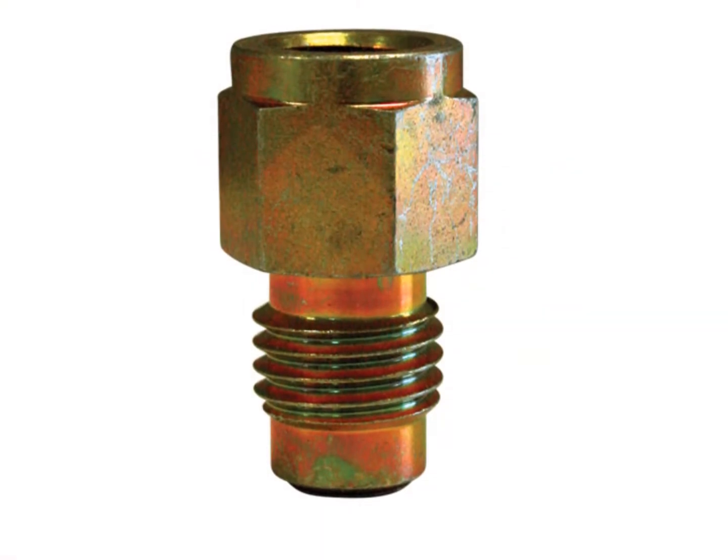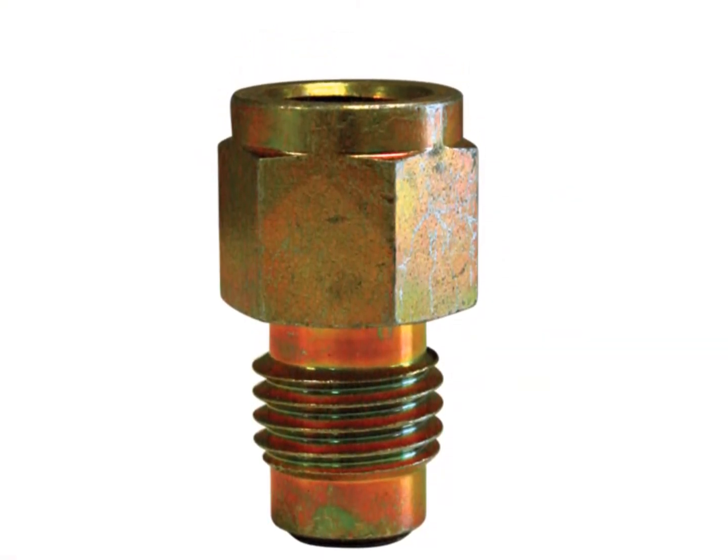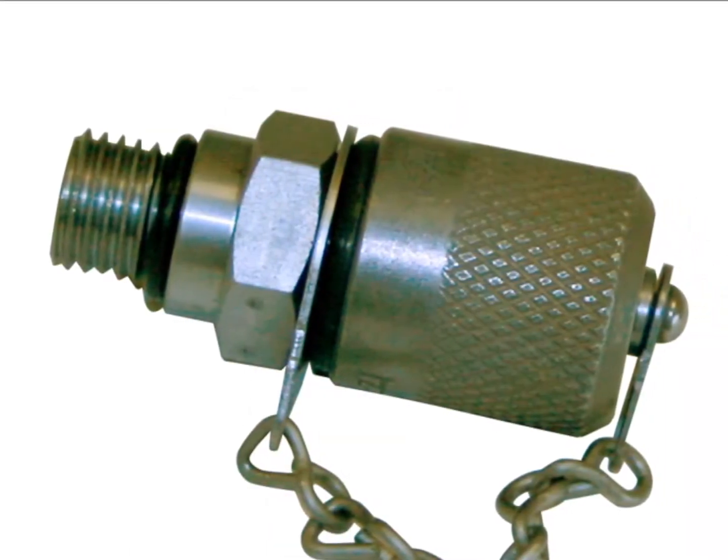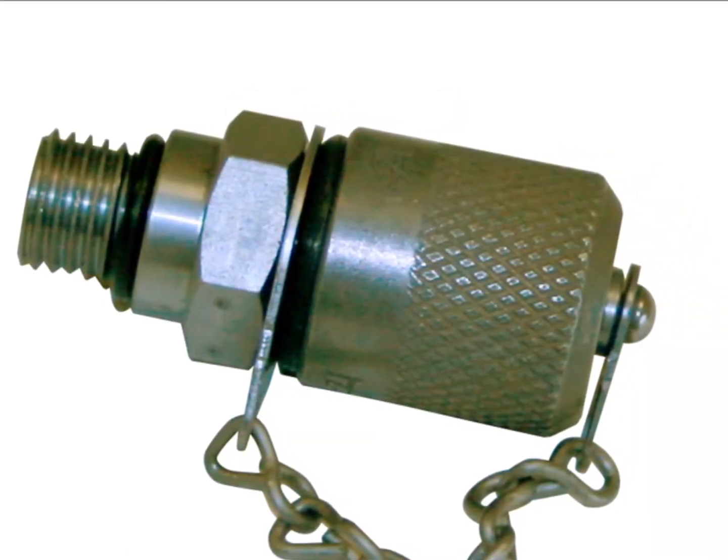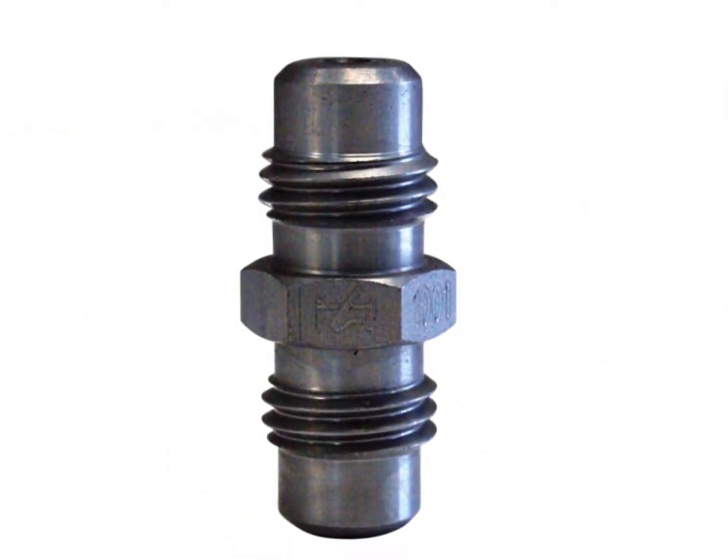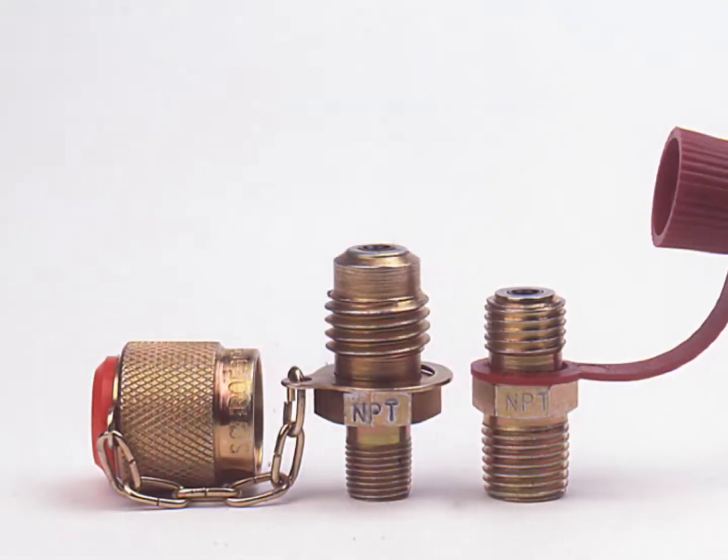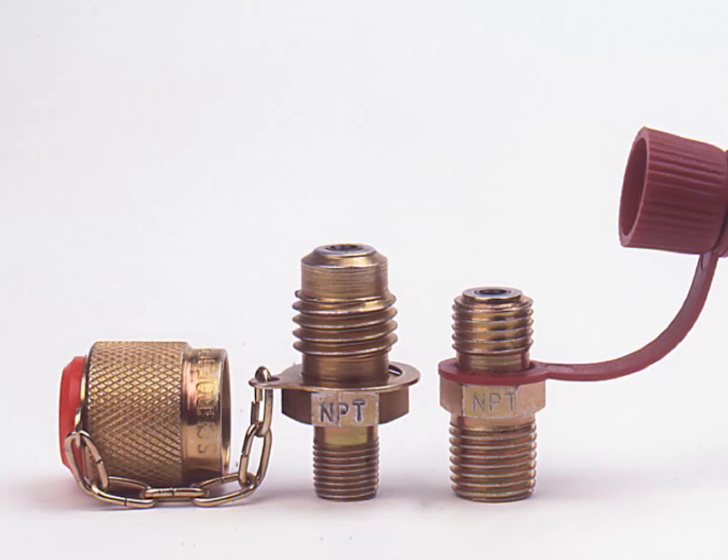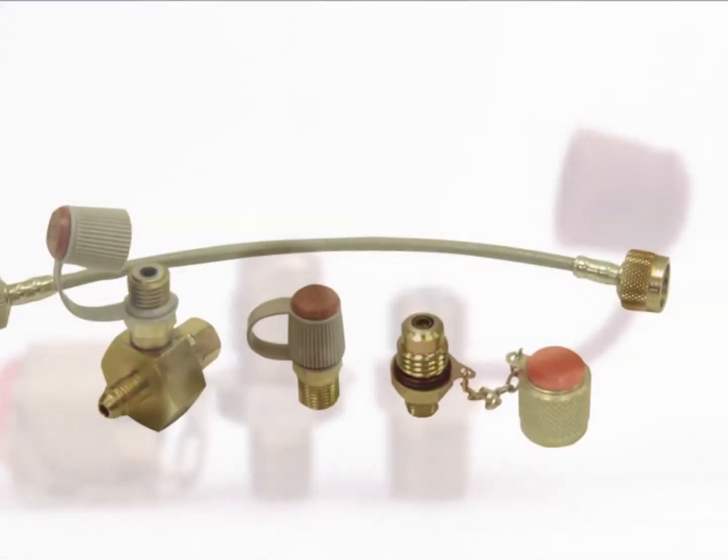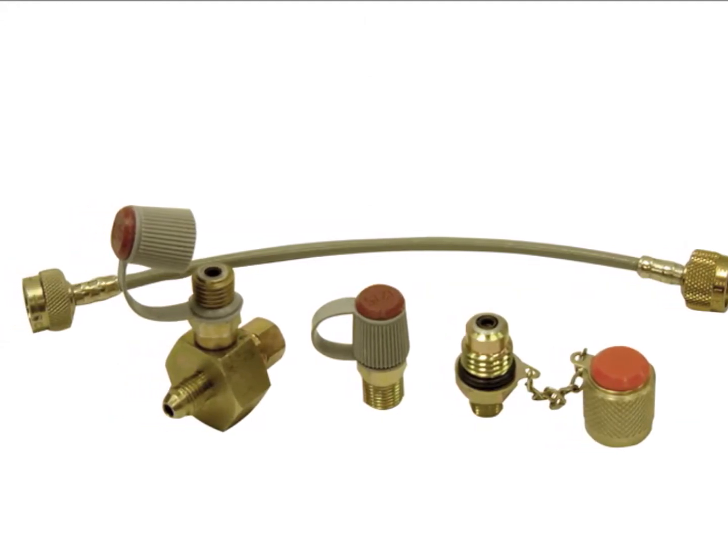Today we're going to talk about the Schroeder check fittings and hose assemblies that are available. Schroeder has many fittings for various applications including gauge adapters. You can install them in line and put test hoses on to it. You can bleed systems with it, do oil sampling without shutting the system down. There's patented built-in check valves internally of these different fittings.